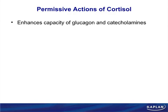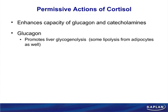Permissive action means cortisol doesn't do something directly, but enhances something else — it enhances the capacity of glucagon and catecholamines. It enhances glucagon's capacity to break down glycogen in the liver; cortisol's major activity on the liver is through enhancing glucagon's effect. Glucagon means to bring back glucose; it causes the liver to break down glycogen. Think of glycogen like a loaf of bread — it doesn't last forever, about one day. It's why athletes carb-load before marathons. There is lipolysis — decreasing lipogenesis — which is the same as saying it forms ketones.